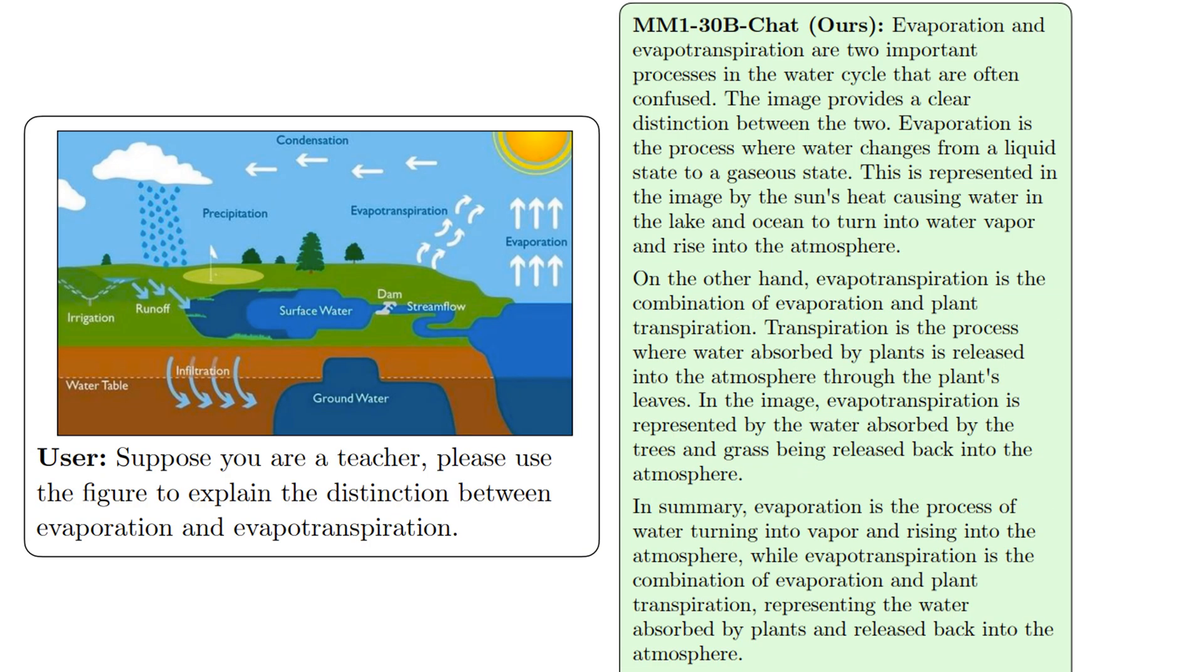This is an experiment in which a role is assigned to the MM1 model. Assume you are a teacher. Please use the figure to explain the distinction between evaporation and evapotranspiration. Well, when the role of teacher is assigned to the MM1 model, it provides responses that are consistent with this role. This is an important property for large language models. We can read the response that MM1 has provided.